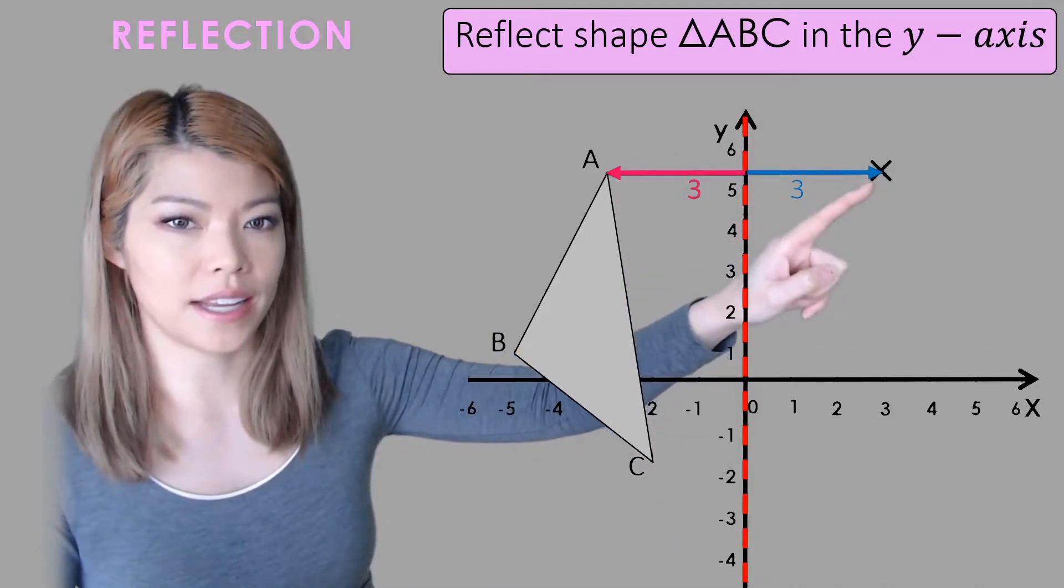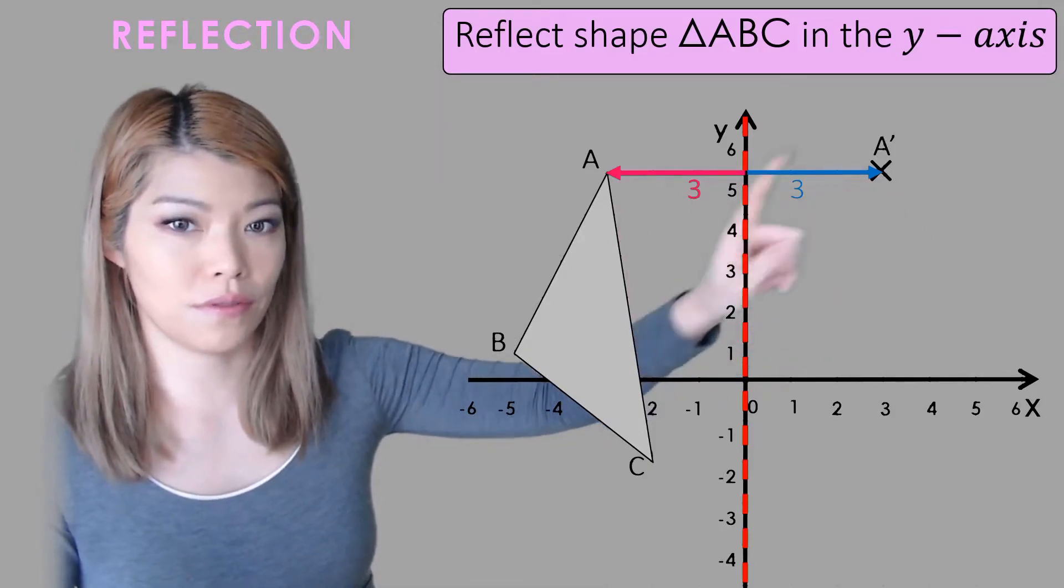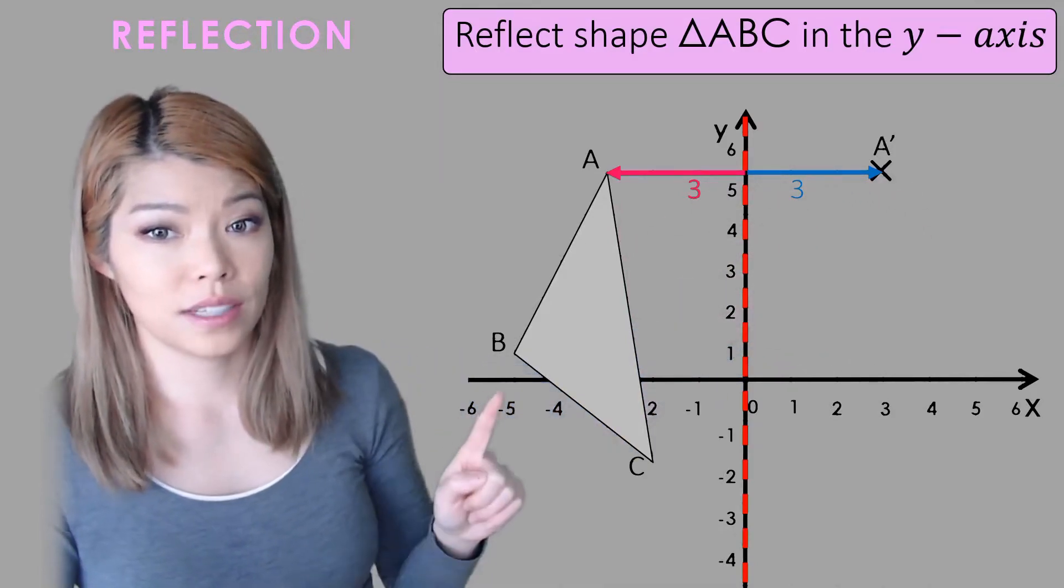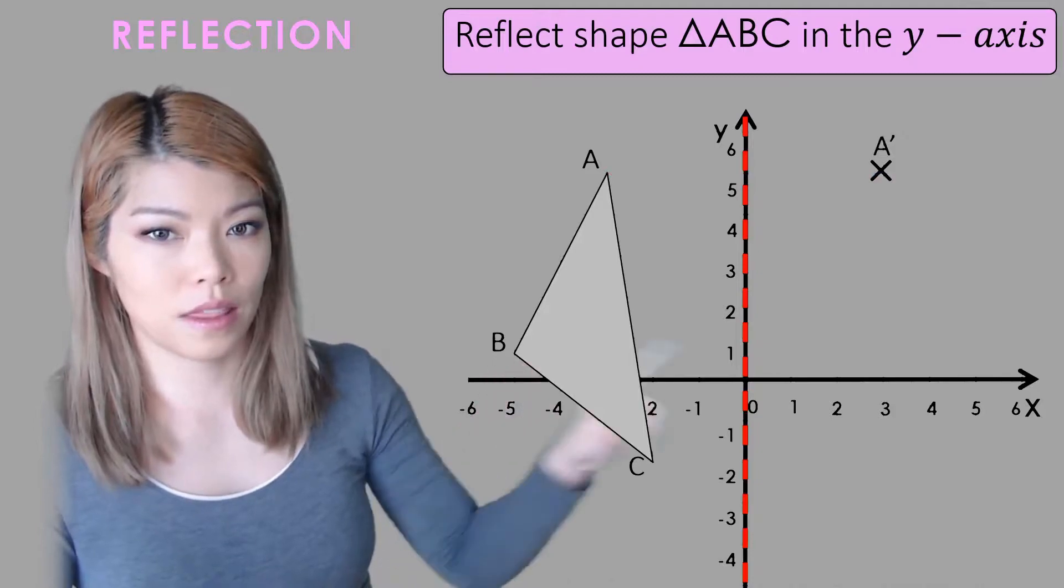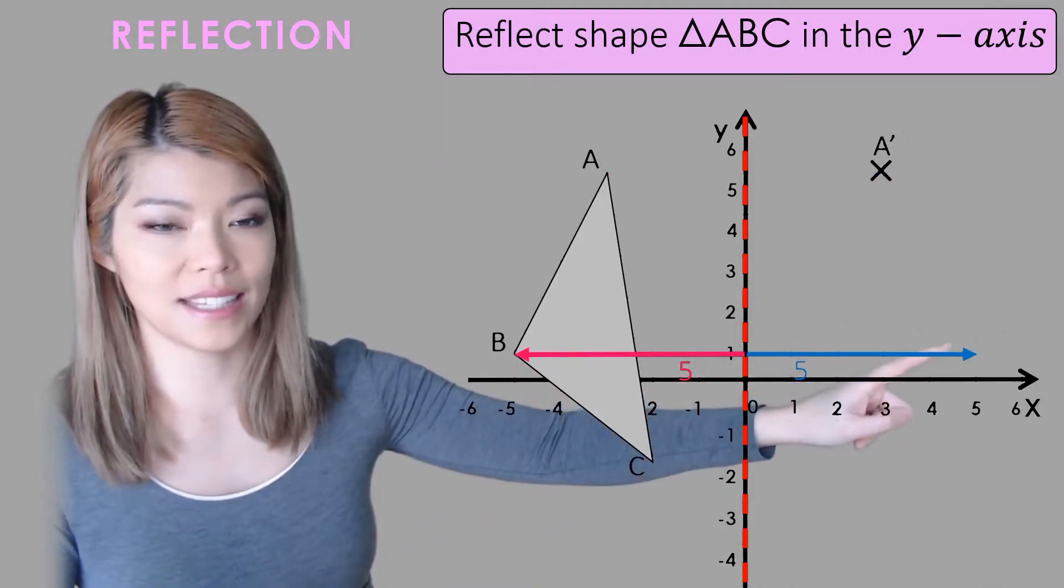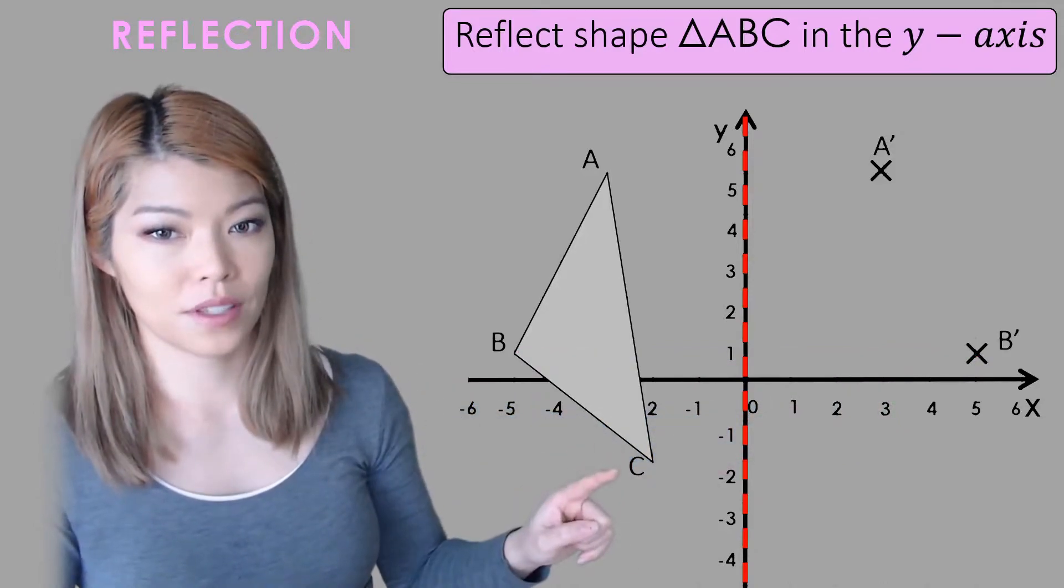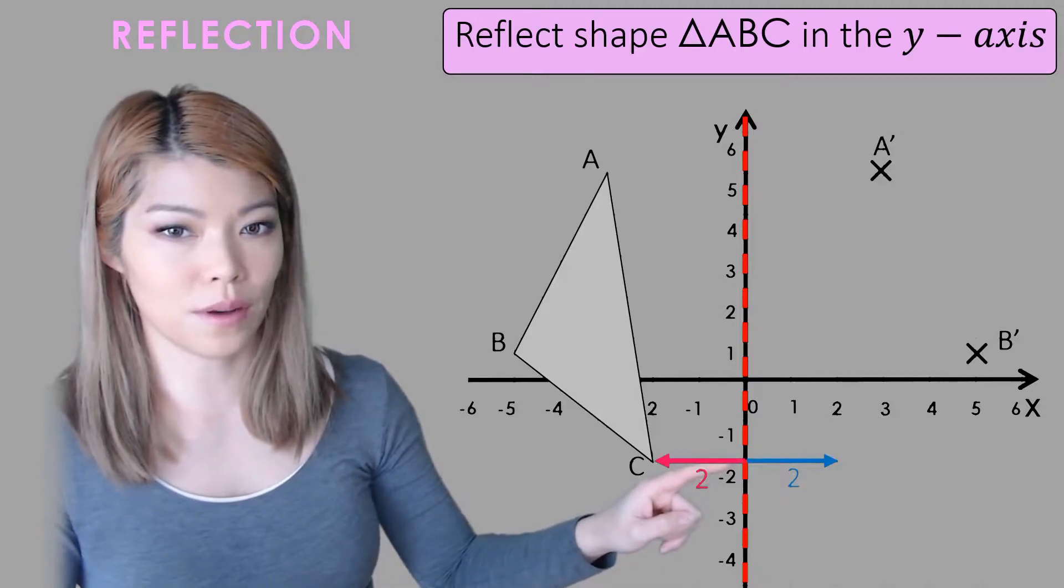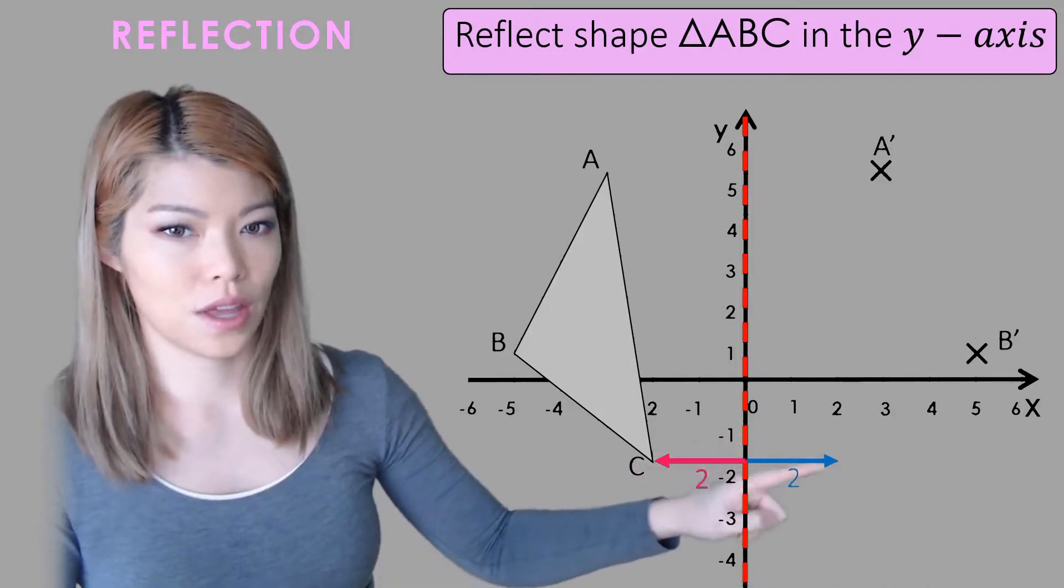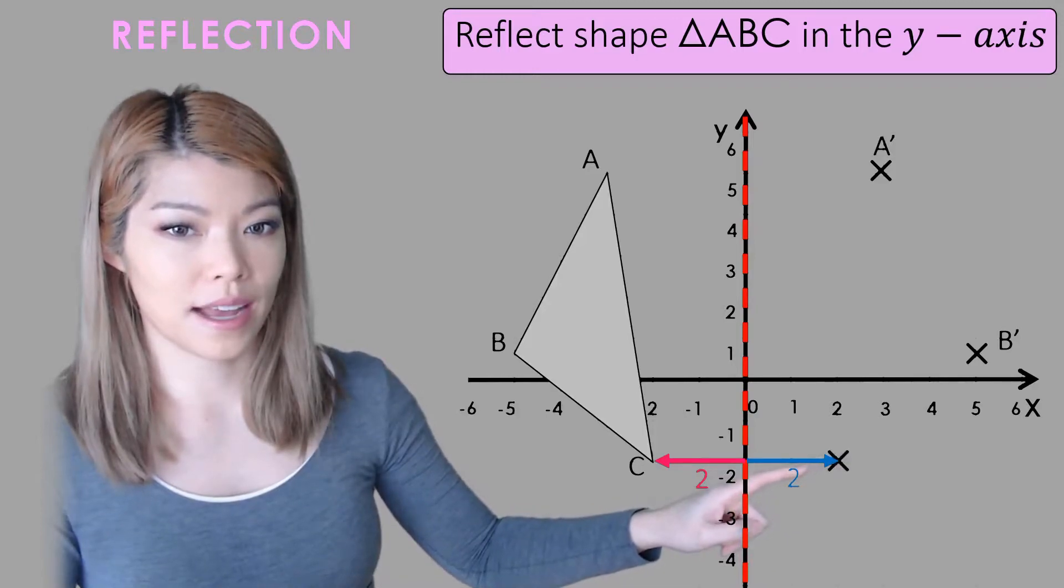So now we have point A' which is the mirror image or the reflection of A. Now we do the same for B. How far is it from the mirror? It is five spaces, so we find that spot on the other side. Label it as B'. Do the same for C' which is two spaces away from the y-axis. So therefore on the other side it will also be two spaces away. Label that as C'.